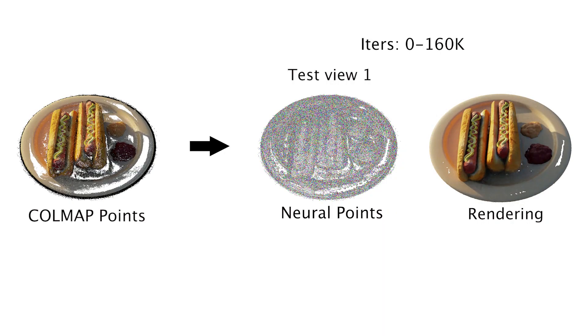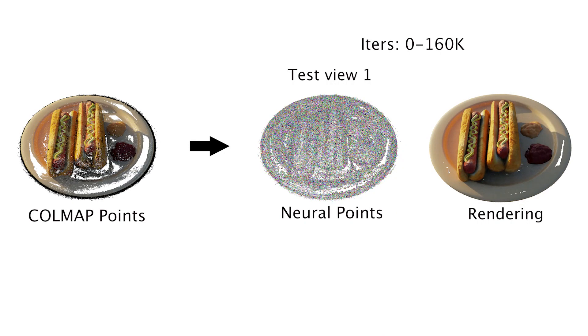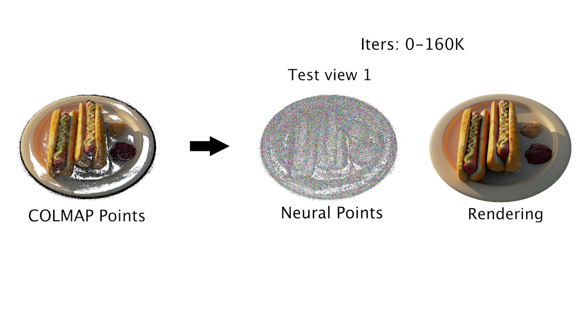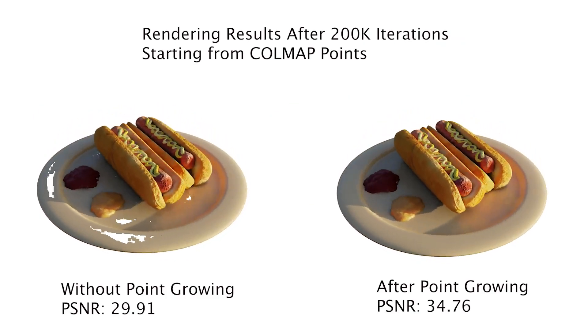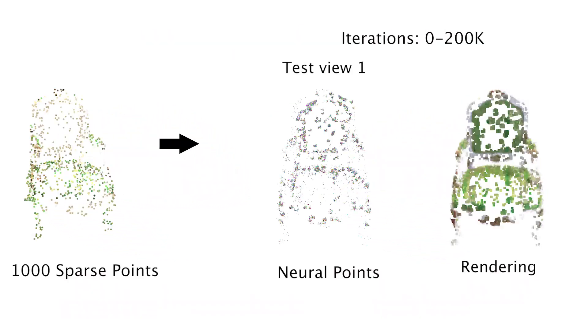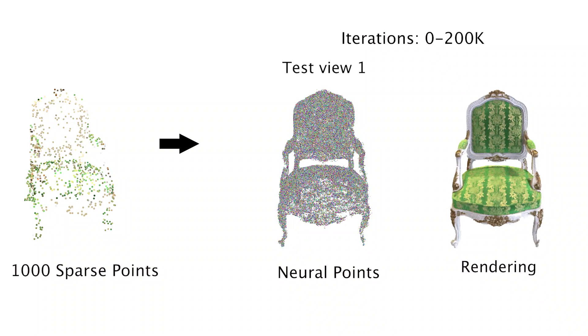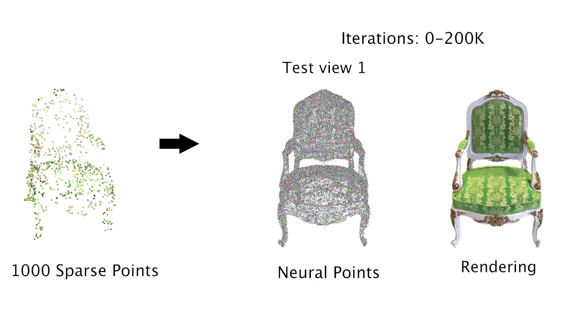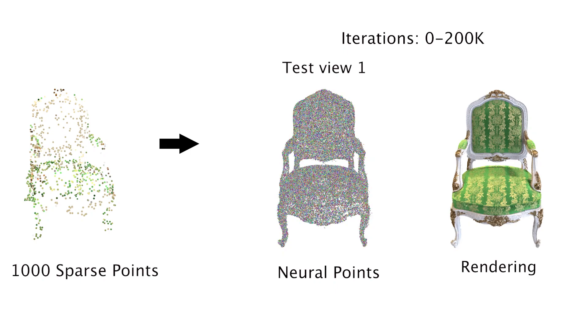Here we also demonstrate the effectiveness of point growing. With only rendering loss, PointNRF can even grow out the entire chair from only 1,000 initial points.